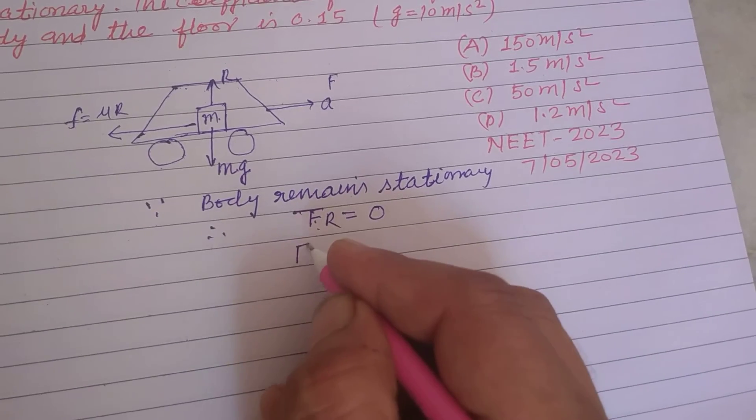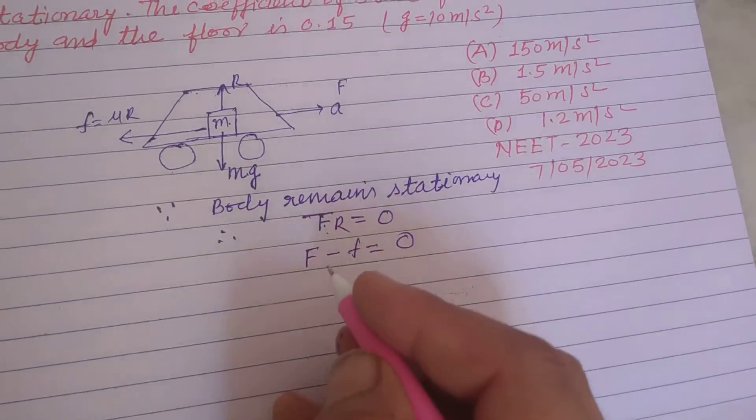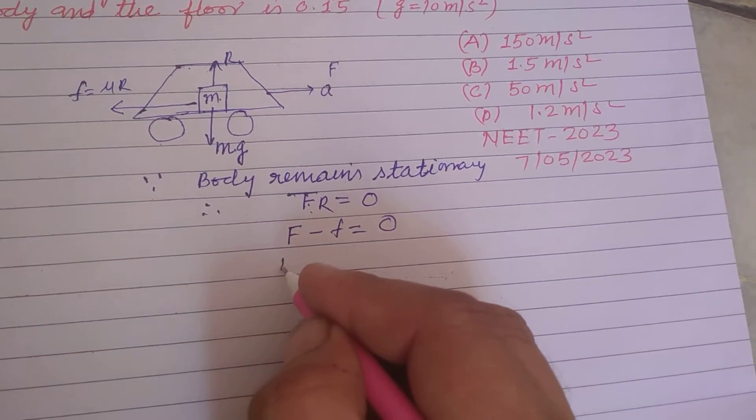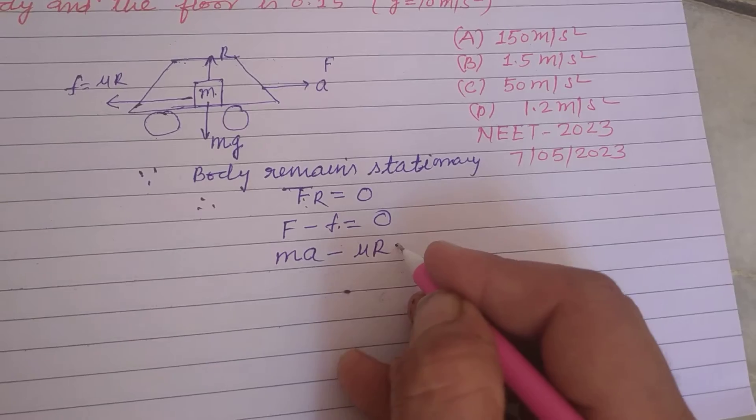And resultant force we got f minus f equal to 0. This is ma minus f equal to μR equal to 0.